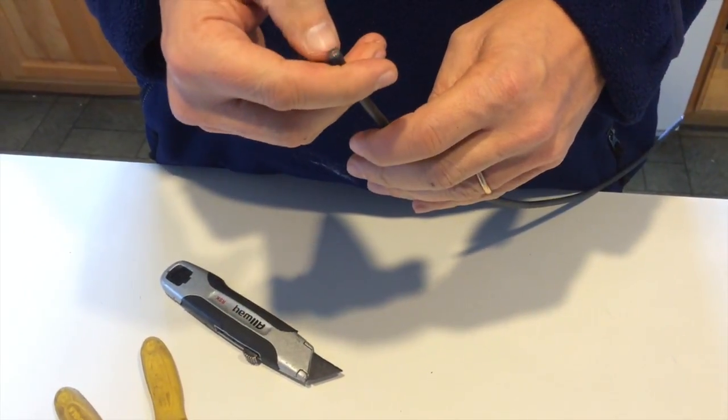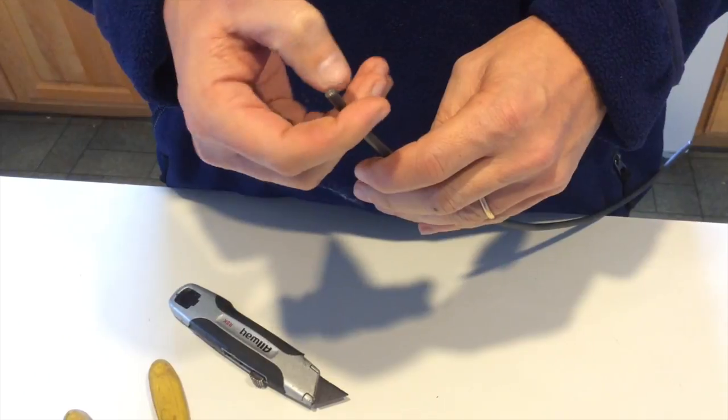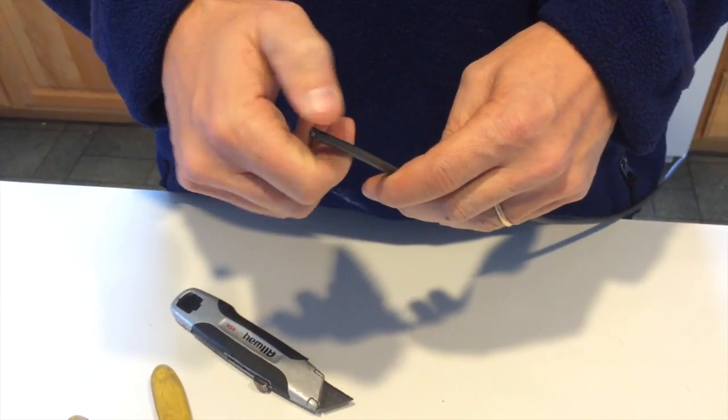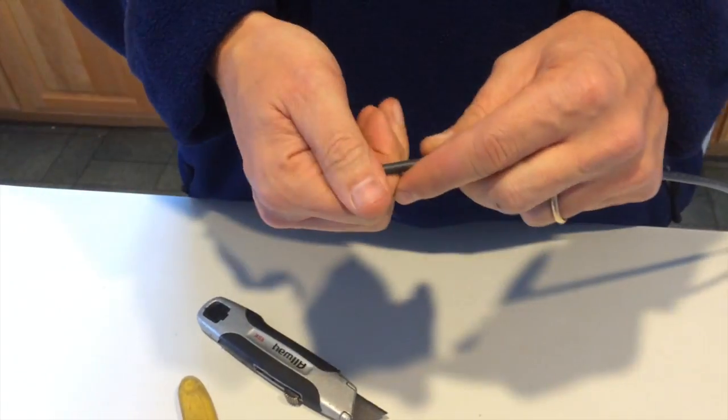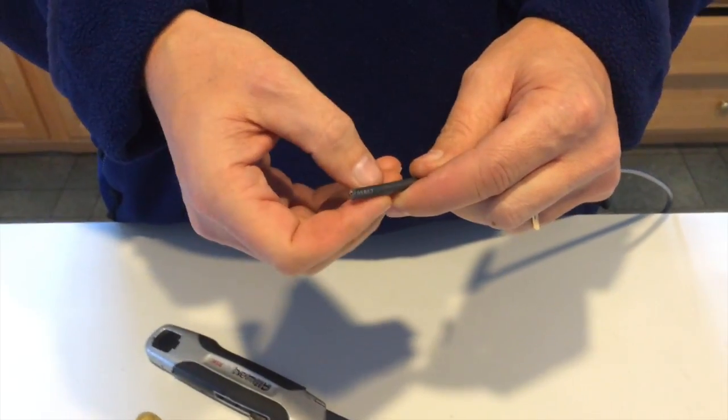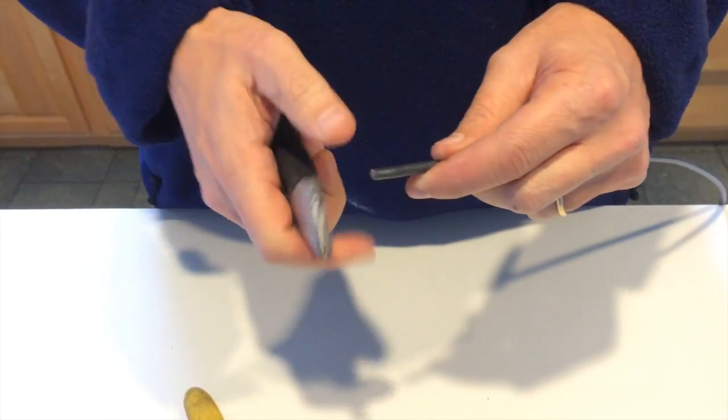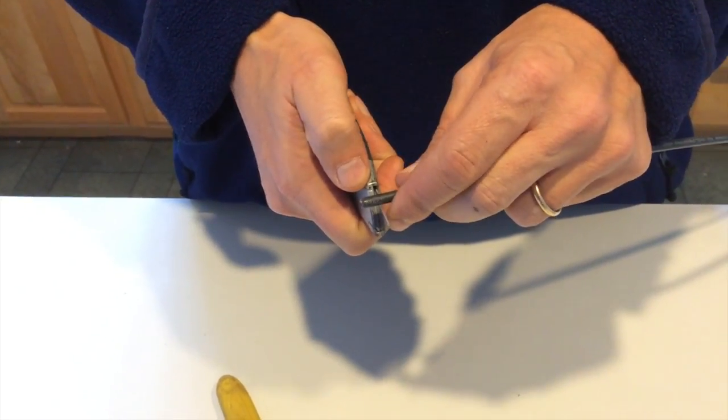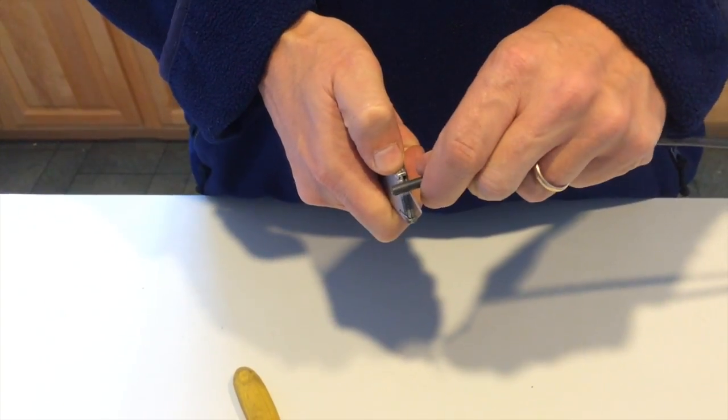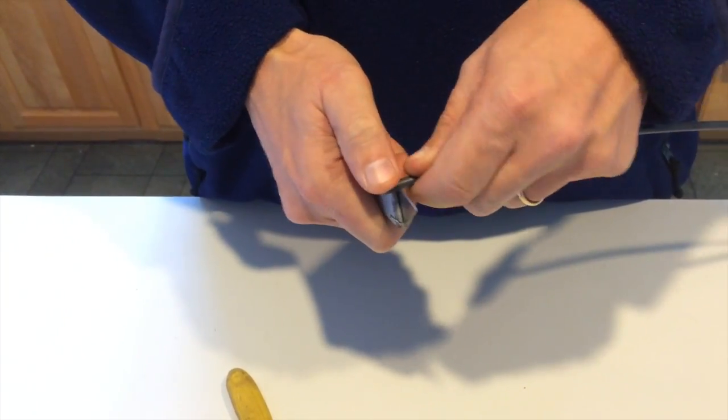Some of the newer wires have a lot more insulation and frankly are a pain. You may want to pay for an actual stripper for those because you're not going to nick the wire as much and it's just going to be a lot easier. For this, I'm just using an X-Acto knife. You've got to be really careful. These are sharp. You don't want to hurt your fingers. I'm just going to rotate this around here.